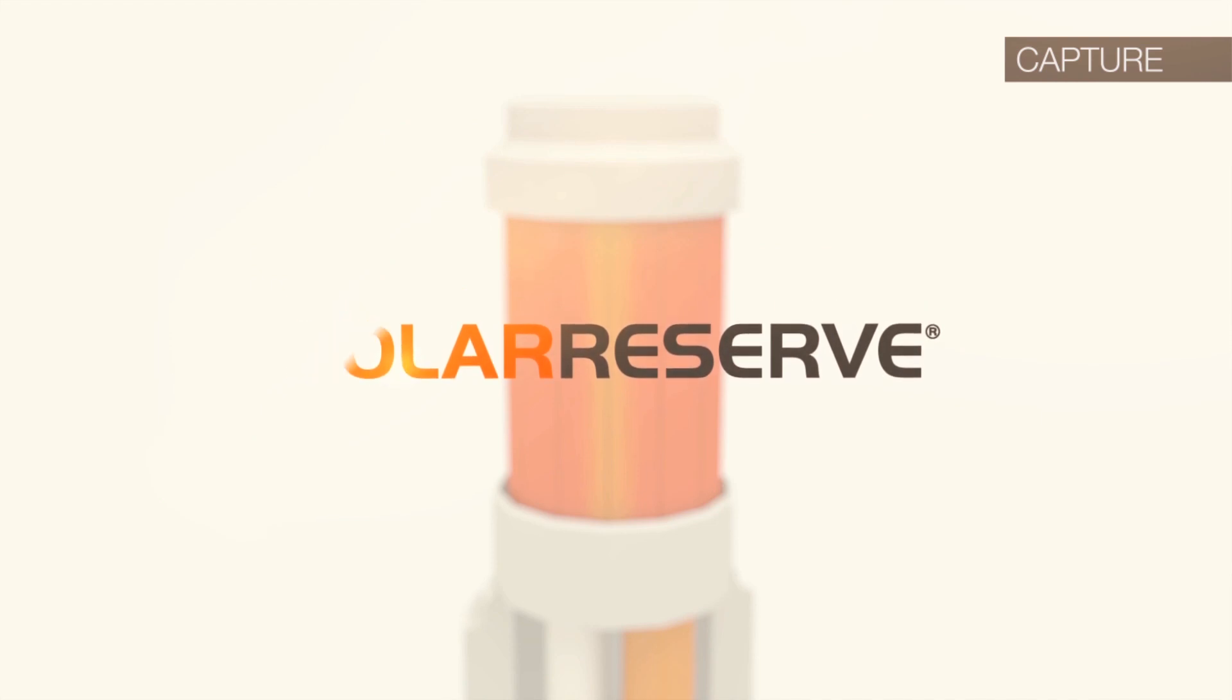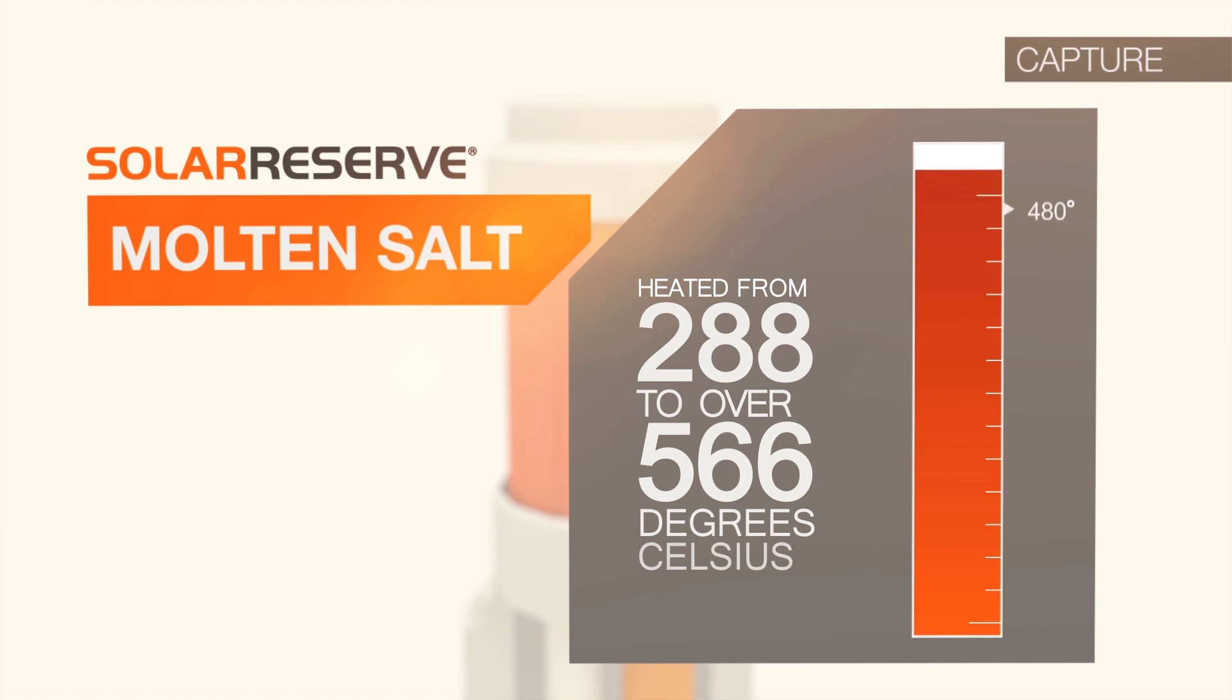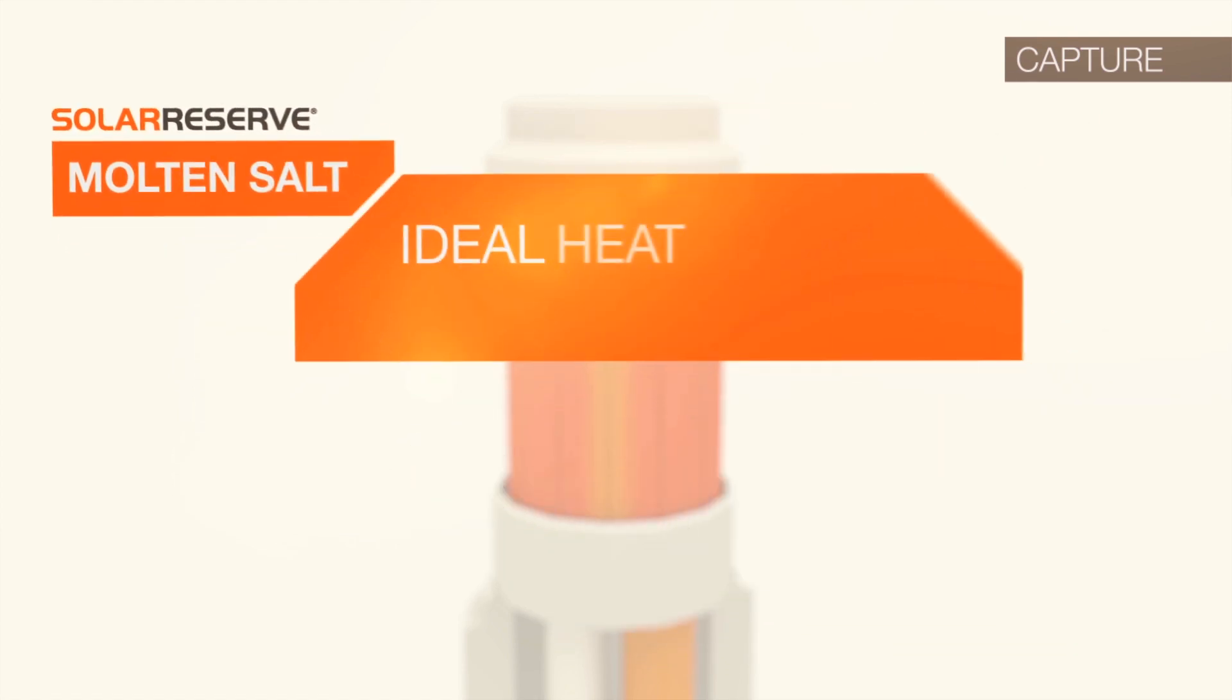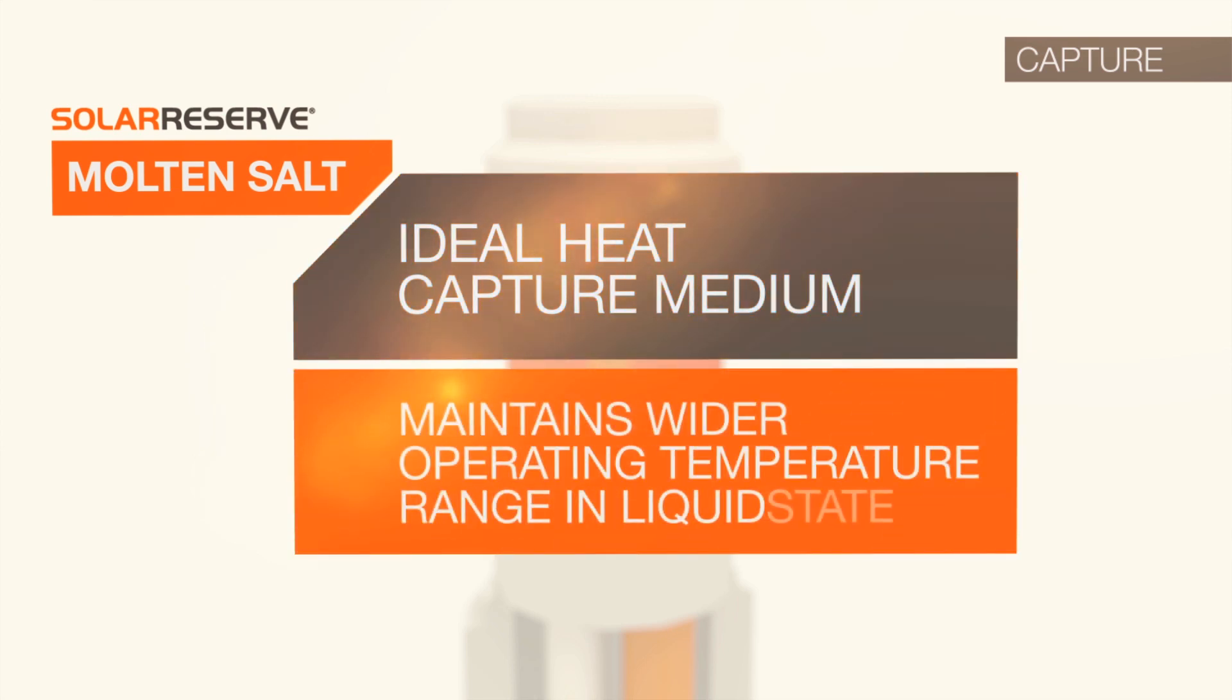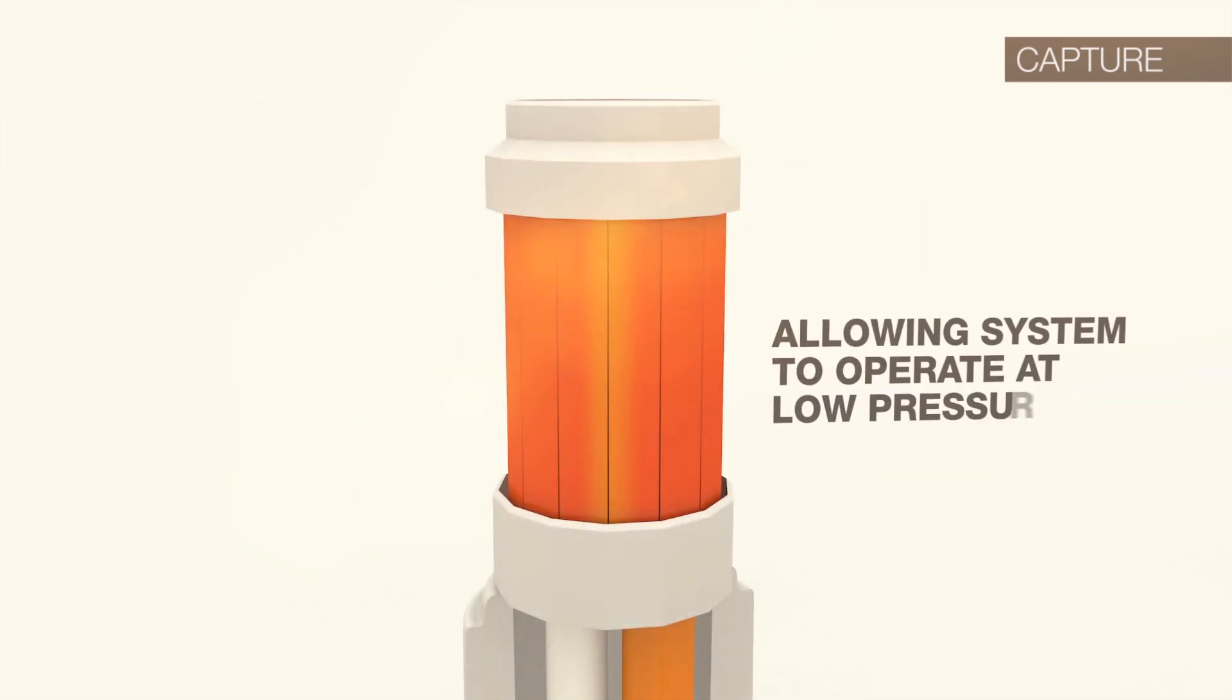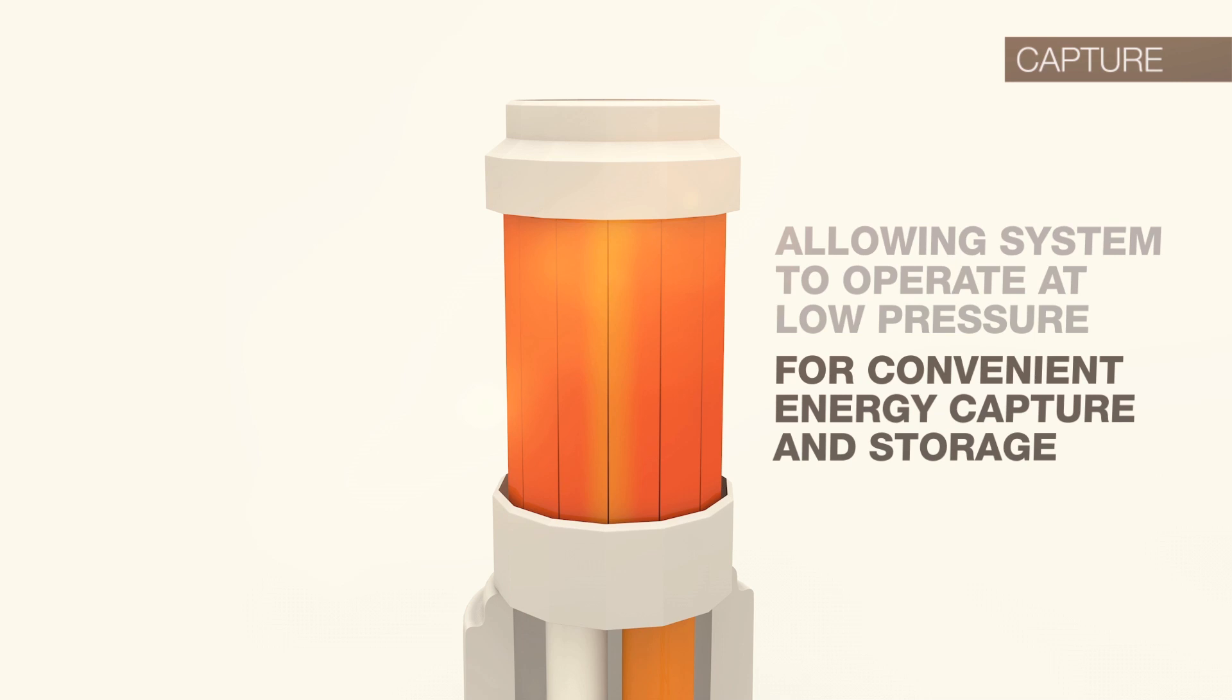In Solar Reserve's technology, the fluid utilized is molten salt, which is heated from 288 to over 566 degrees Celsius. Molten salt is an ideal heat capture medium because it maintains a wider operating temperature range in liquid state, allowing the system to operate at low pressure for superior and safe energy capture and storage.